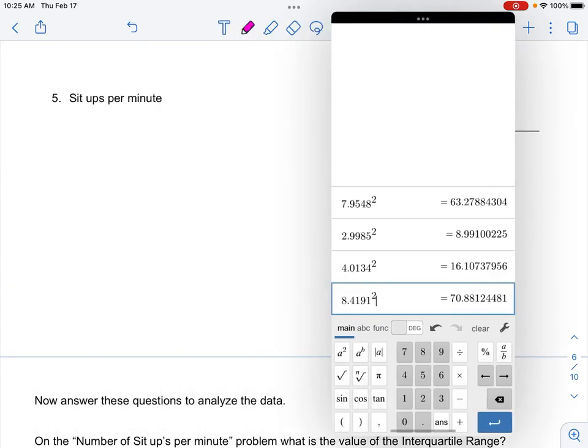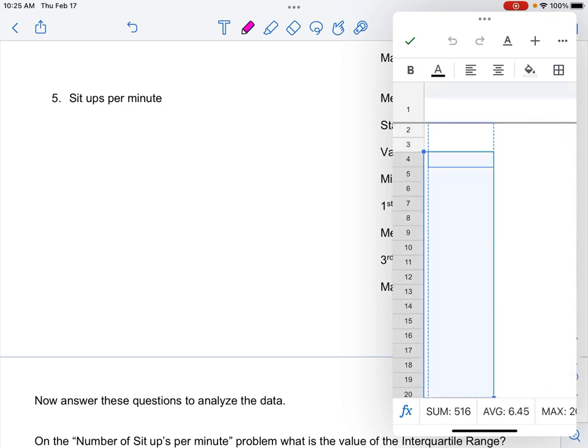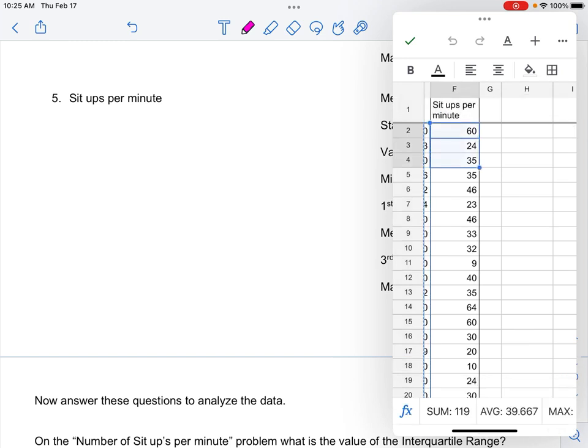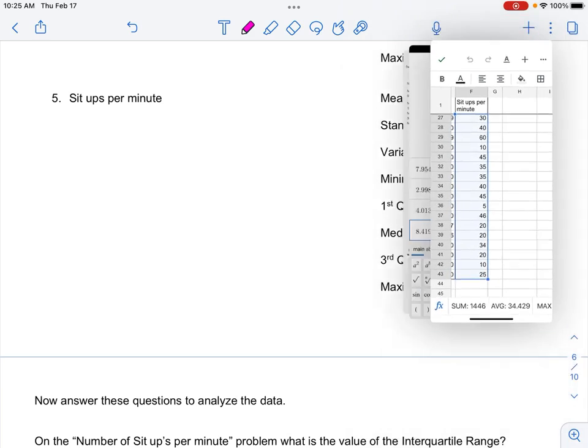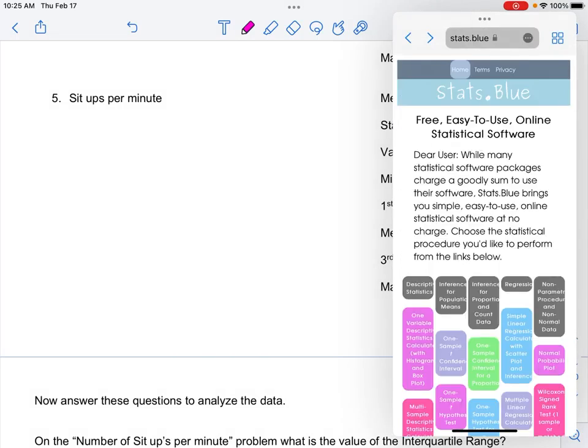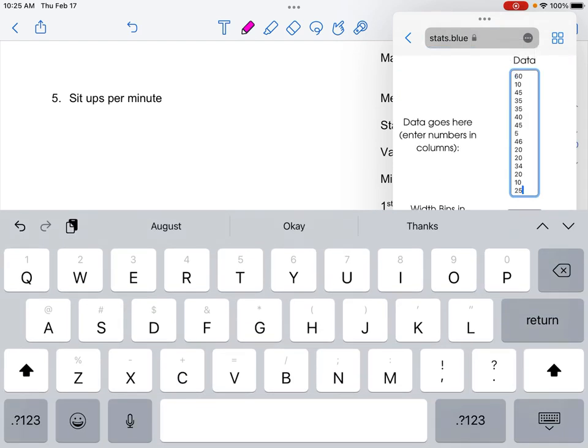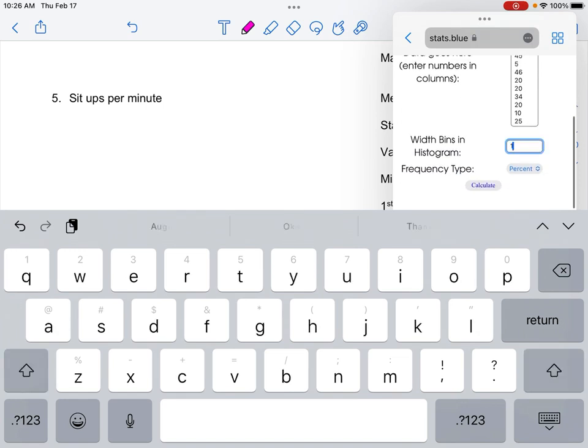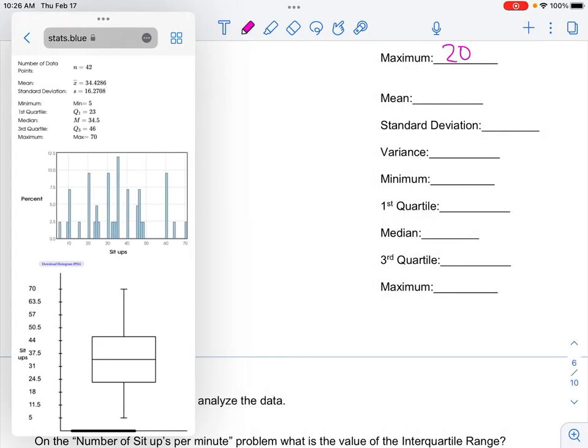And then last one, we have sit-ups per minute. Go ahead and copy this data. Come back here. Paste it in. This is sit-ups. One bin wide. Calculate. And we can plug in our info.